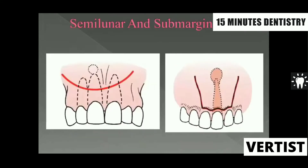The next flap is the semi-lunar flap. If you are doing subperiapical surgical procedures, it is preferred to have a semi-lunar flap. The advantage of this flap is that you are not disturbing the gingival attachment here — the marginal epithelium is not going to recede in the post-operative period — and there is direct accessibility to the periapical region. In case of a triangular or quadrangular flap, you have to completely reflect to the periapical region. So it is always preferred to have a submarginal or semi-lunar flap when doing periapical surgeries.